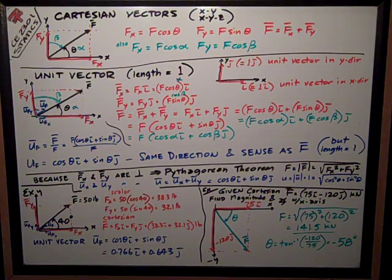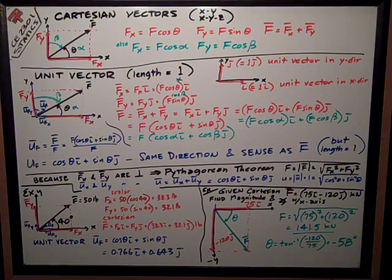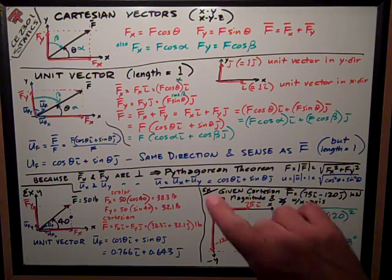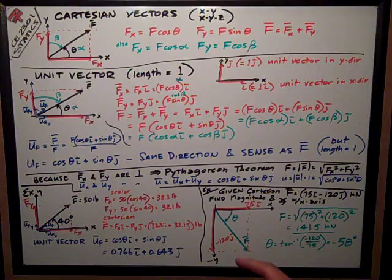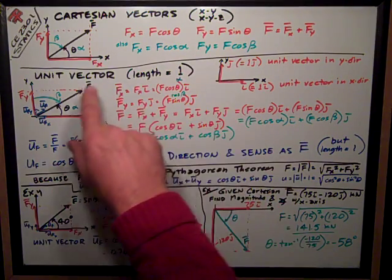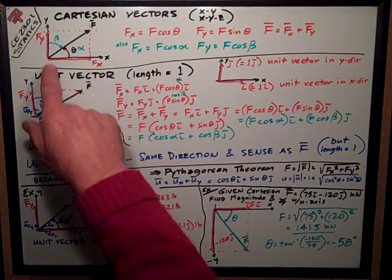We're talking about Cartesian vectors, which are the x-y coordinate system way of dealing with vectors. It's also x, y, z, as we'll phase into. First, we're just going to talk about the simpler form of x and y.